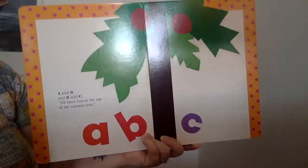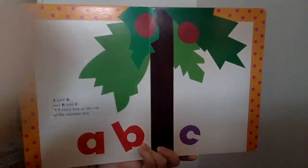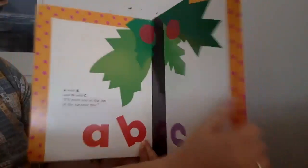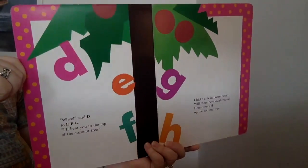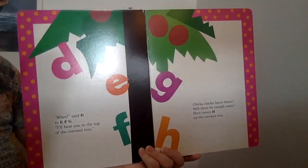A told B and B told C, I'll meet you at the top of the coconut tree. Wee, said D to E, F, G. I'll beat you to the top of the coconut tree.